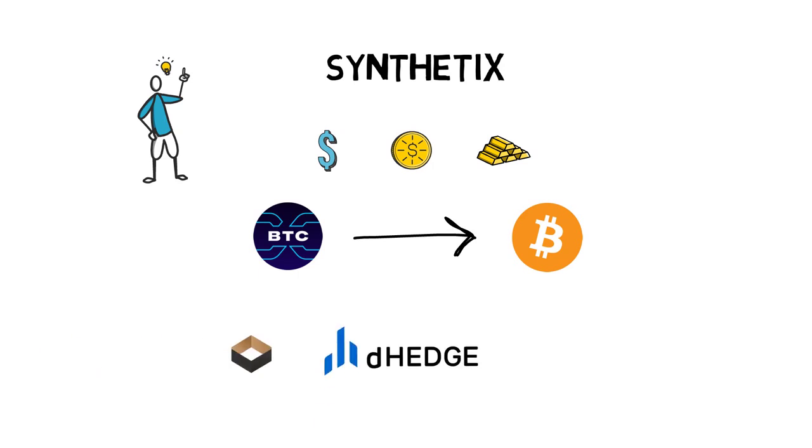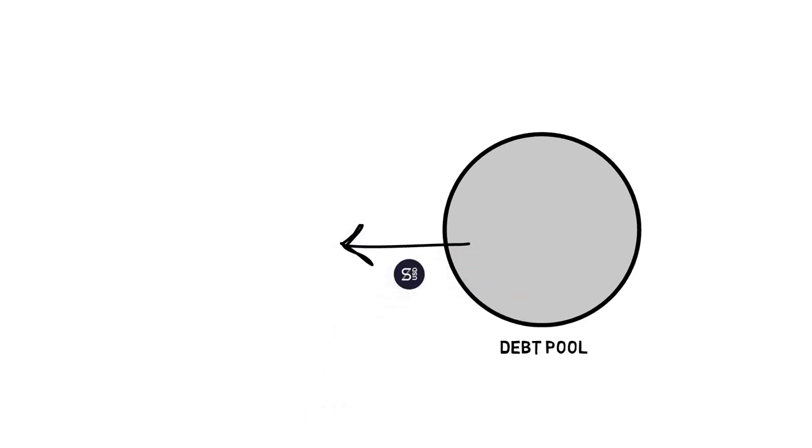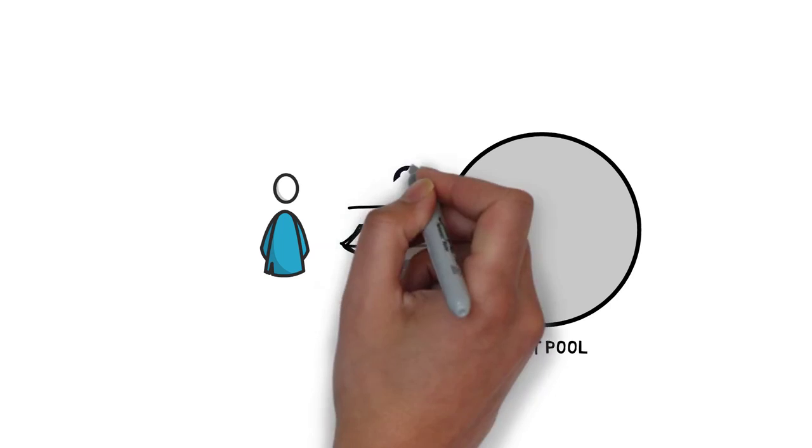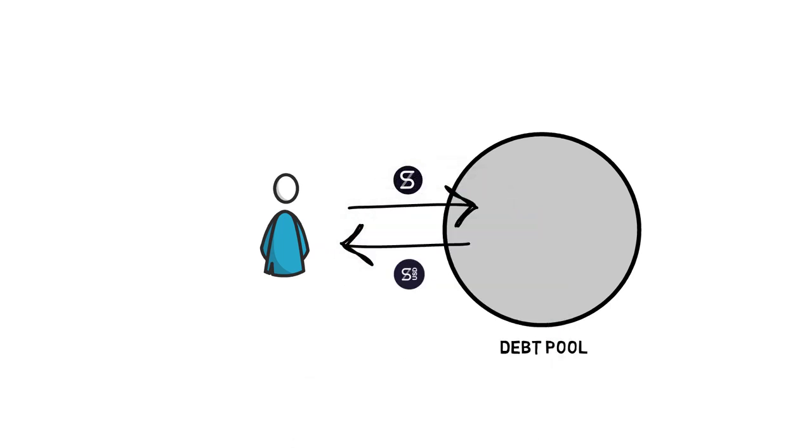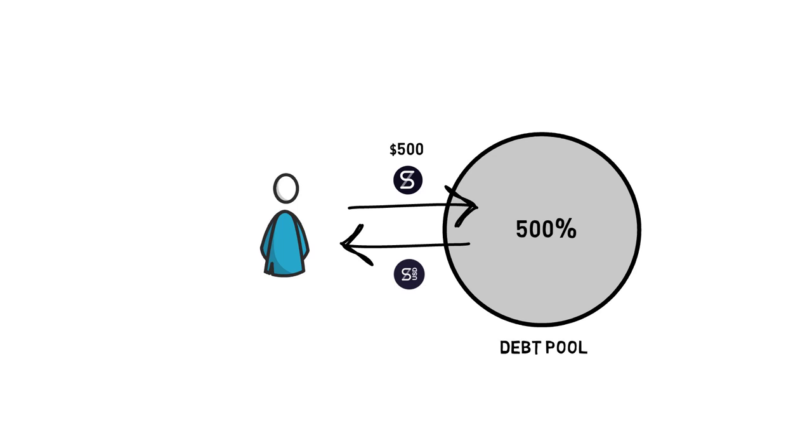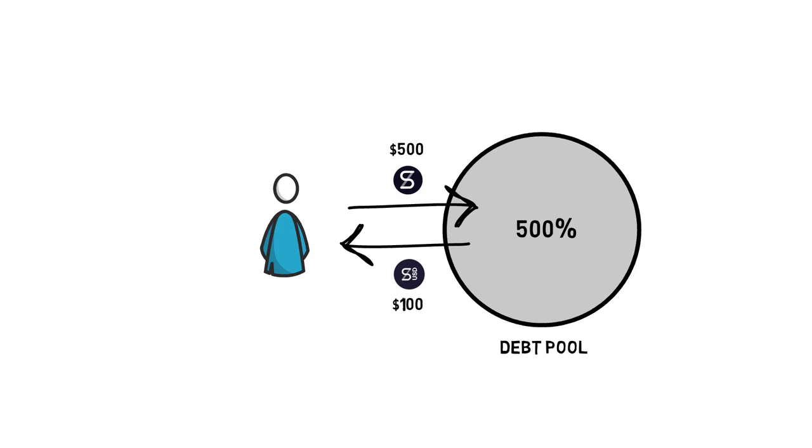That can be traded on trading platforms such as Kwenta, dHEDGE or Paraswap. Synthetix model is based on a debt pool. In order to issue a particular synthetic asset, a user has to provide collateral in the form of the SNX token. The protocol is highly over collateralized, currently at 500%.